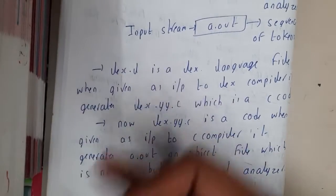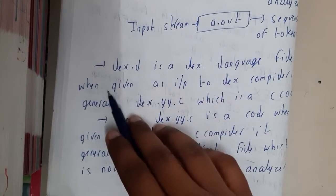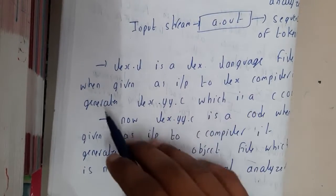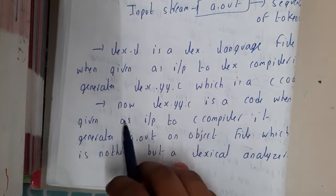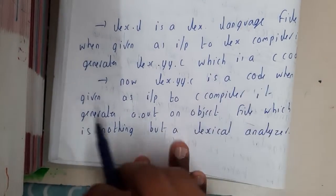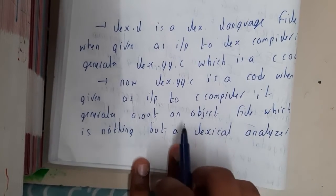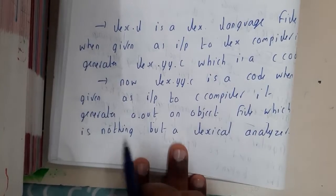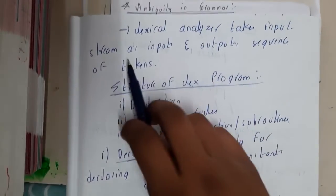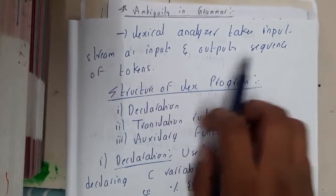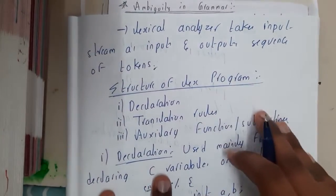In our own words: a dot-l file is a Lex language file which, when given as input to a Lex compiler, generates lex.yy.c, which is a C code file. When lex.yy.c is given as input to a C compiler, it generates a.out as an output object file, which is nothing but the lexical analyzer. The lexical analyzer then takes an input stream as input and outputs sequences of tokens.